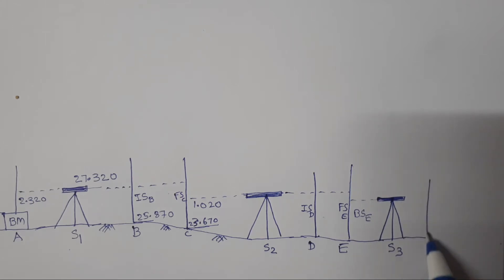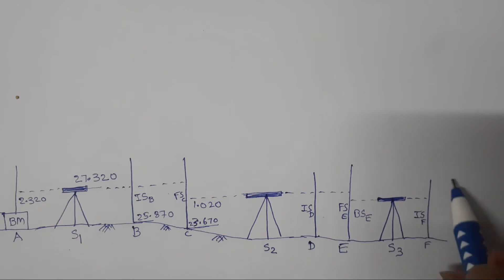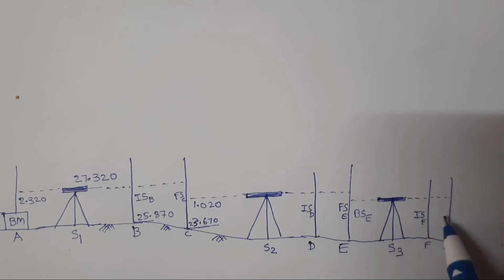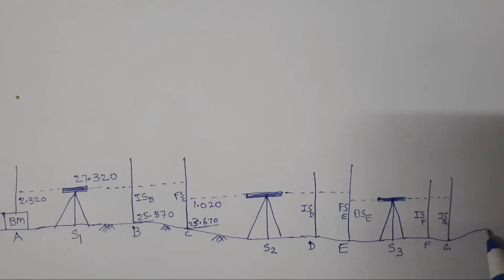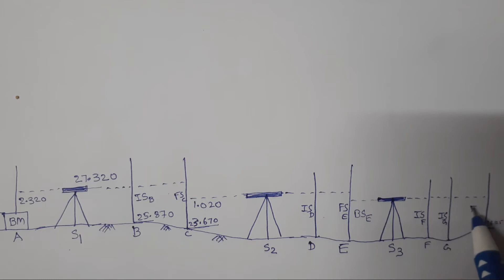On F, intermediate sight is taken — ISF. On G, intermediate sight is taken — ISG. The last point is H. The RL of H is given, which is equal to 26.125, and the foresight of H is also not known.